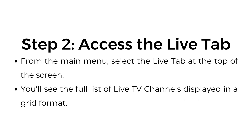Step number two: access the live tab. From the main menu, select the live tab at the top of the screen. You'll see the full list of live TV channels displayed in a grid format.